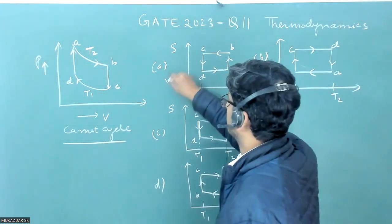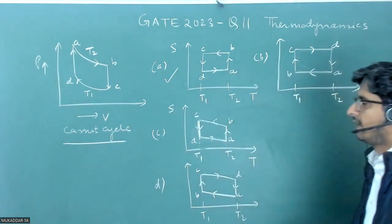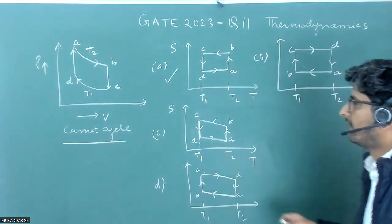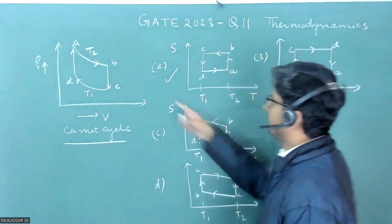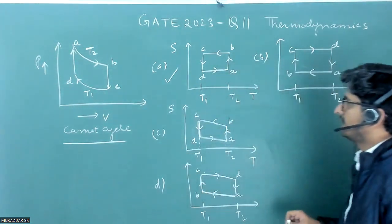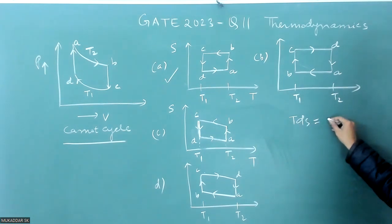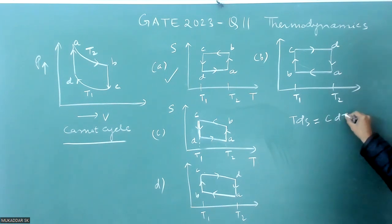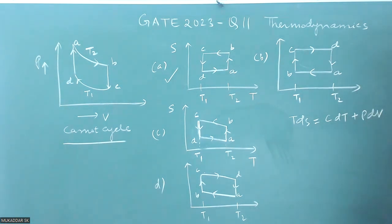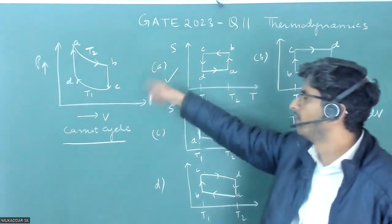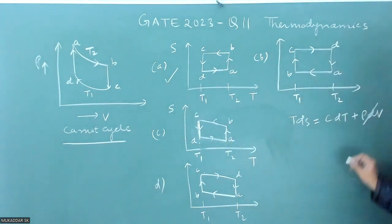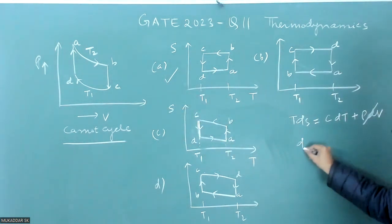But if you go by figure and you see this BC, so BC is like if you write Tds is equal to CdT plus PdV, it is something like that and because the volume is constant so this term I can neglect. So ds will become some CdT by T.